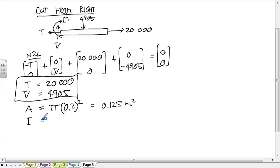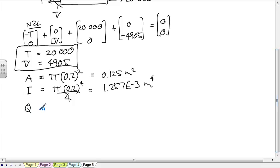I is equal to pi times 0.2 to the 4th divided by 4. What do you get for that one? Q is equal to 2 times 0.2 cubed over 3. What's that one?